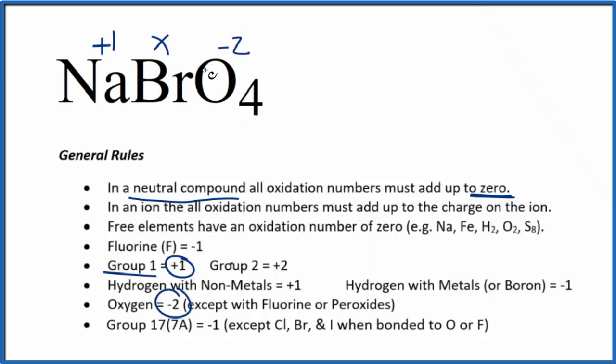So with this information, and the fact that it adds up to zero, we can figure out the bromine. Let's just set an equation up. We could say one plus x, minus two times four.